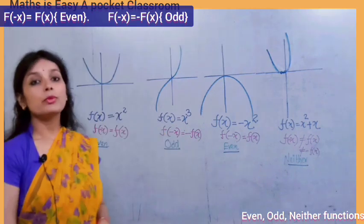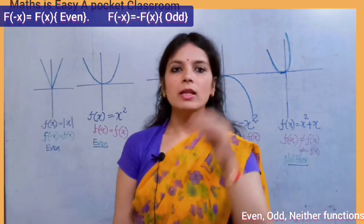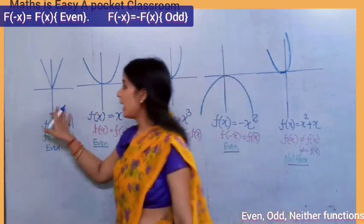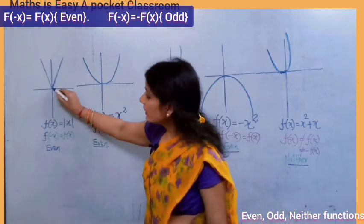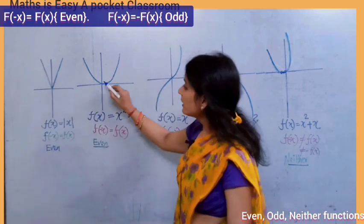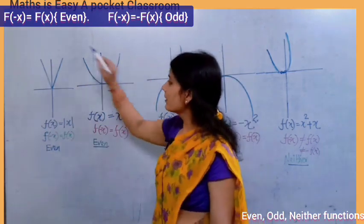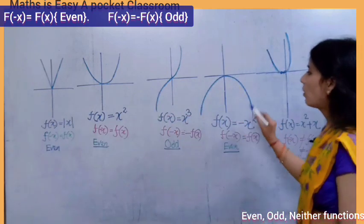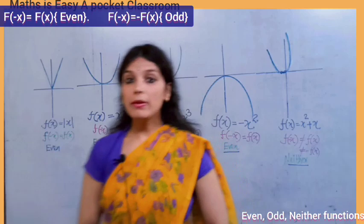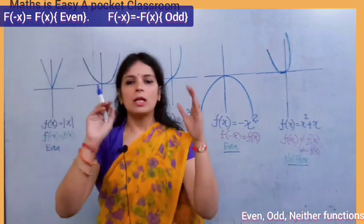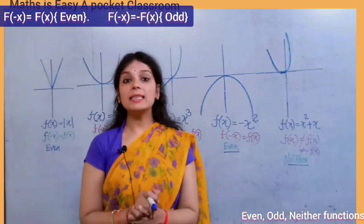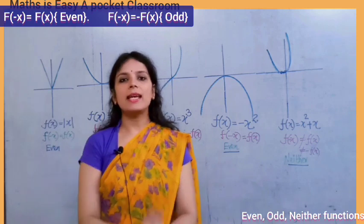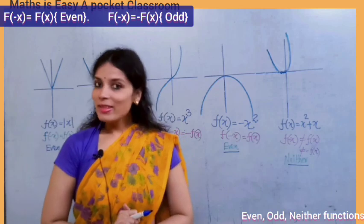Let's get started with the geometrical interpretation of even and odd functions. Have a look at these curves — this curve is symmetrical along the y-axis, this curve is symmetrical along the y-axis, and this curve is also symmetric along the y-axis. So if a function is drawn in the coordinate plane and its curve is symmetrical along the y-axis, it is said to be an even function.